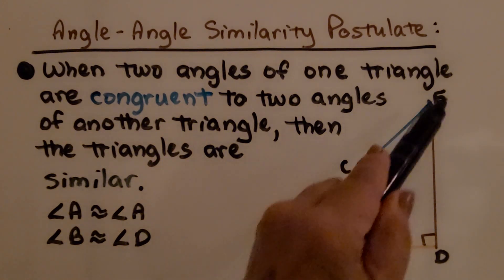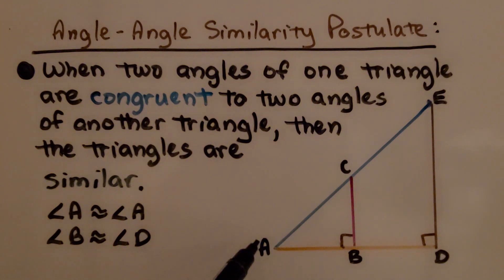We have a large triangle here, triangle ADE, and we have this smaller one inside of it, ABC. They both share angle A, and this angle B is a right angle, and this angle D is a right angle, so they both have 90 degree angles. So they both have whatever measure A is, and they both have a 90 degree angle. They're similar.